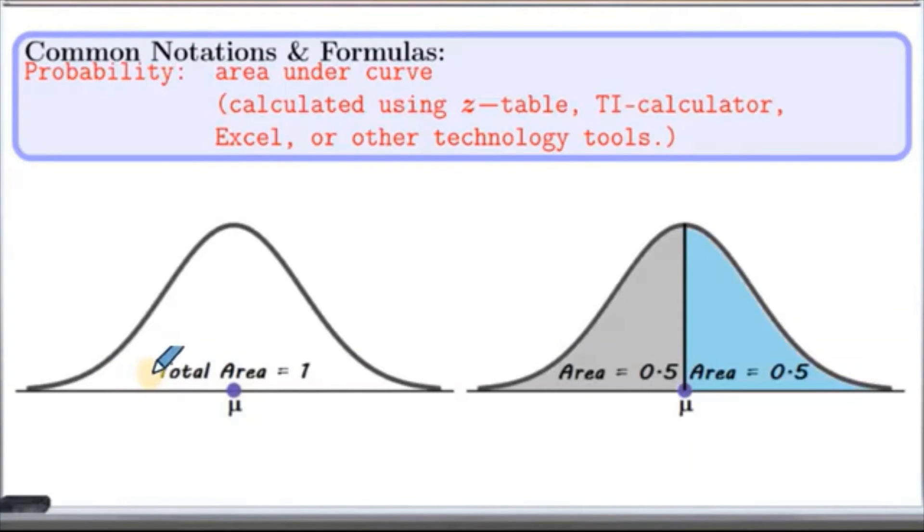Since the graph is symmetric, area on each side, so this side here and this side is 0.5 and 0.5, which adds up to total of 1.